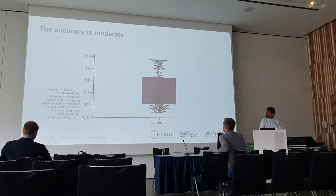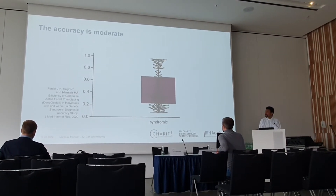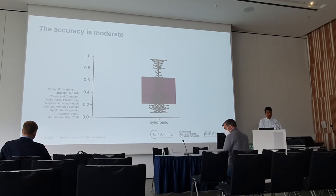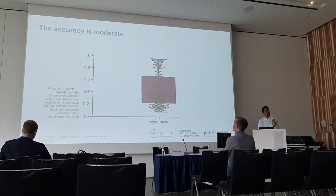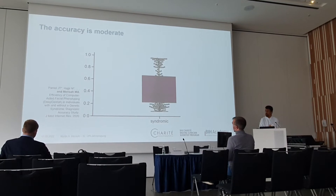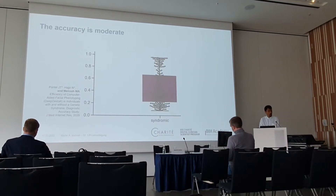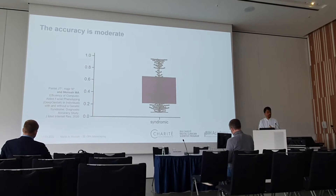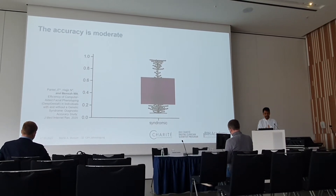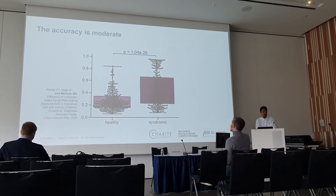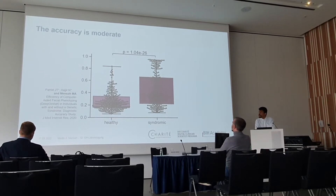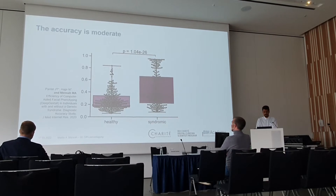When we ran all the affected individuals' images through Deep Gestalt, we saw that the scores actually varied — that's something that surprised me. Not all of them yielded high scores, although all of them showed affected individuals. Some yielded low scores. Nevertheless, they tend to be higher in affected individuals than in unaffected individuals, but still the separation is imperfect.